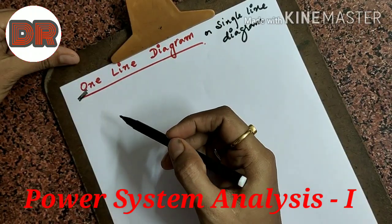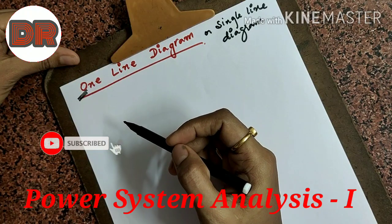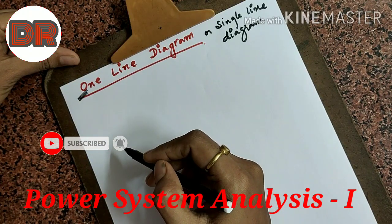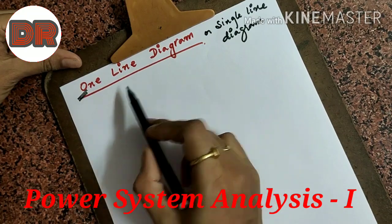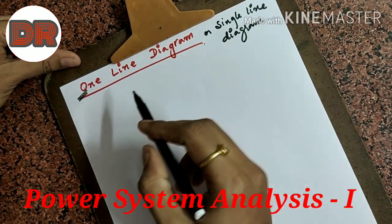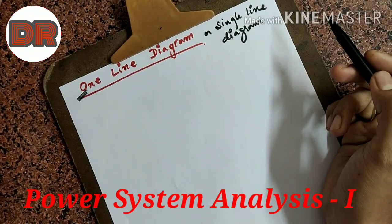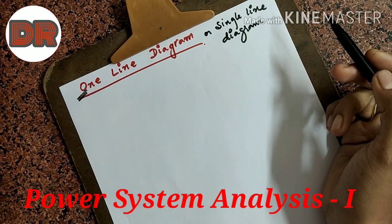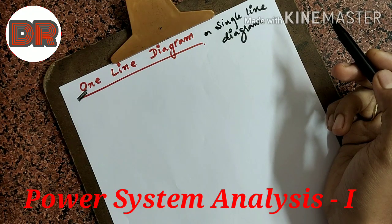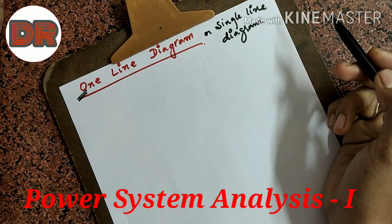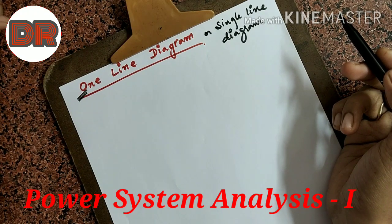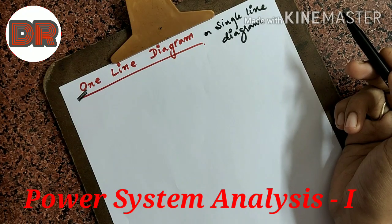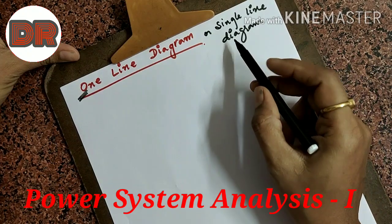The definition of one line diagram is: a diagram showing the interconnection of various components of a symmetrical balanced three-phase power system by standard symbols on a single phase basis. A one line diagram can be drawn only for a balanced and symmetrical three-phase power system. It is always on a single phase basis and is also known as single line diagram.